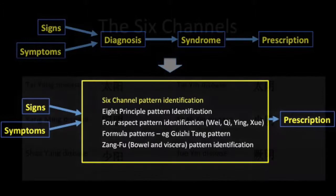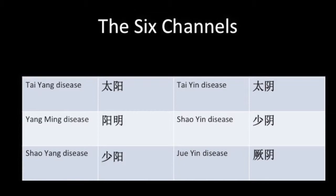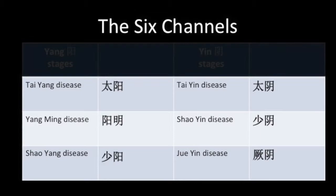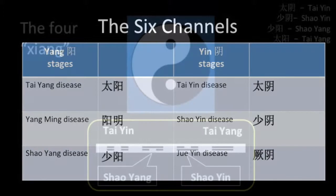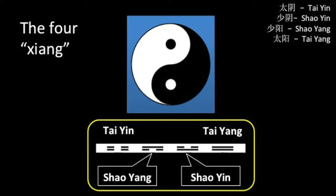The six channels are Taiyang, Yangming, Shaoyang, Taiyin, Shaoyin, and Jueyin. Three of these stages are yang and three are yin. In general, the yin disease stages are more serious than the yang stages. Their names come from the four xiang discussed in my video on yin and yang, together with two other categories.